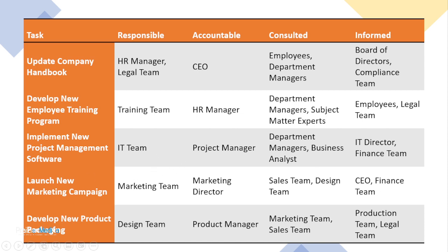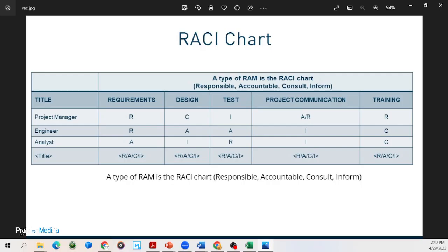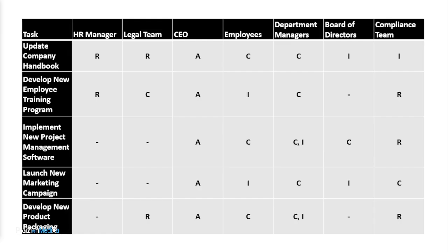My preference — what I like seeing — is something like this: the RACI on one axis so I can look right down a row and see what has been assigned to me. Or, if not that, then a format where you flip the x and y-axis.